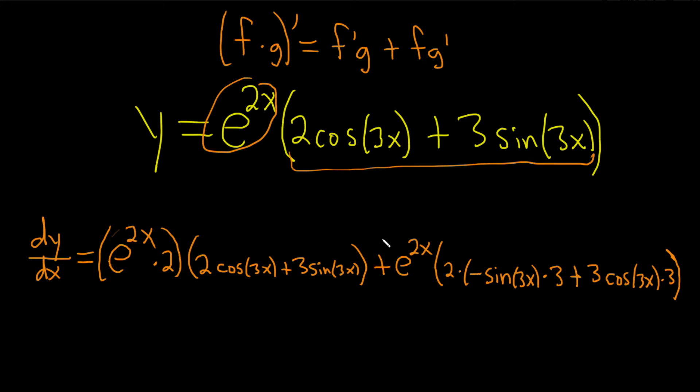Plus the first which is e to the 2x times the derivative of this beast. So the derivative of cosine is negative sine. So we get negative sine 3x. And then chain rule gives us a 3. Derivative of sine is cosine. So we get cosine 3x. Chain rule gives us a 3.